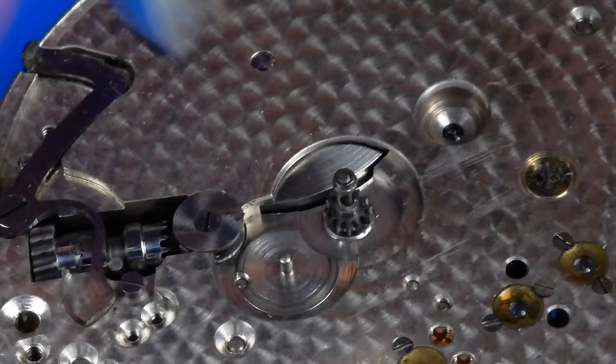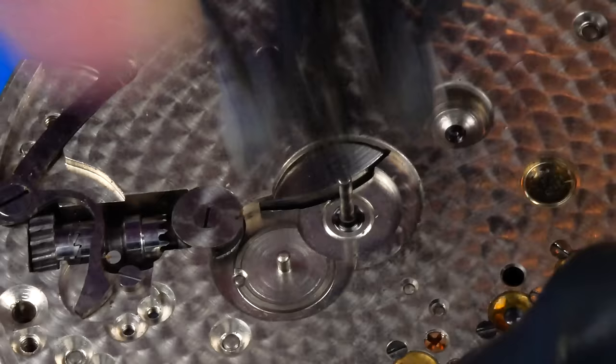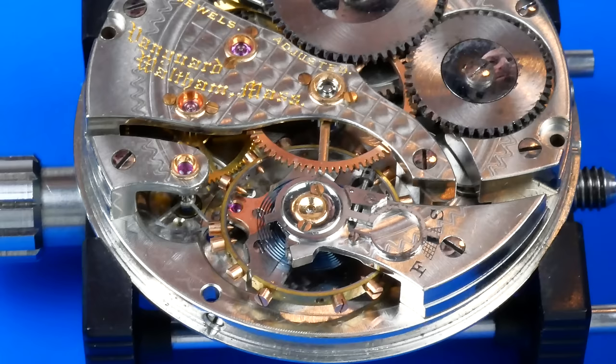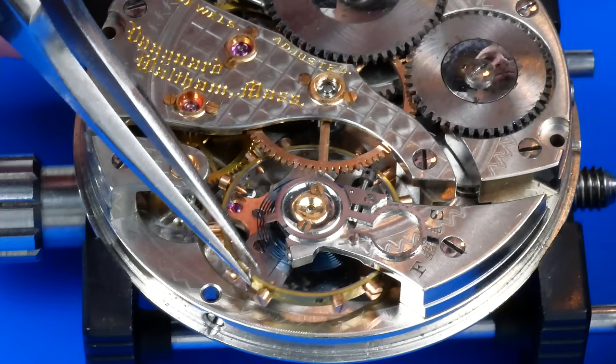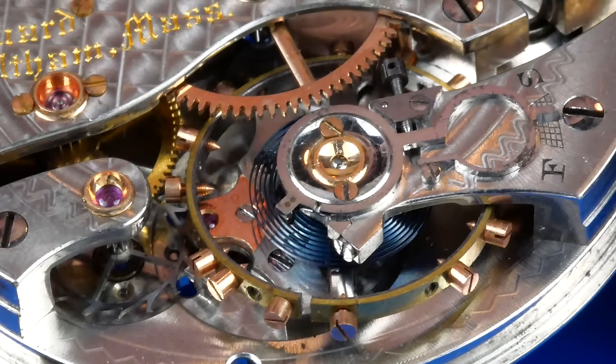I'll now remove the minute wheel and I'll use the presto puller to uninstall the cannon pinion. This balance is toast. I can tell the pivots are broken just by the way the wheel flops around like this.